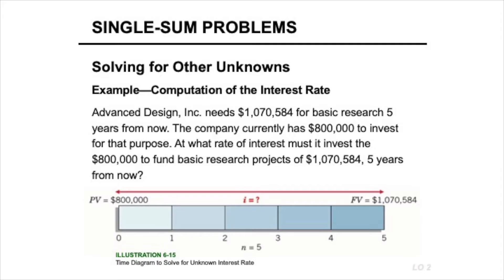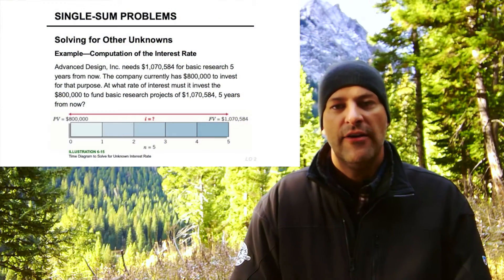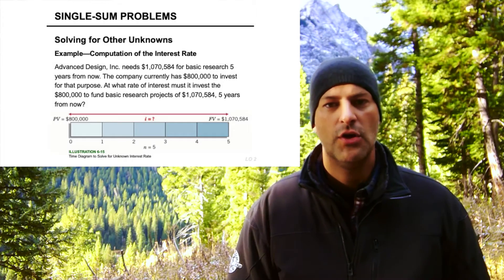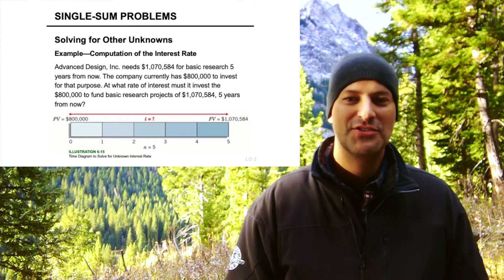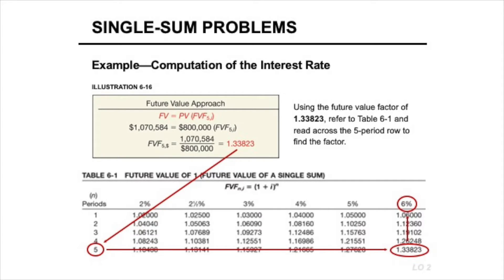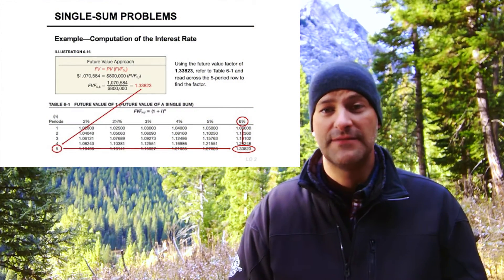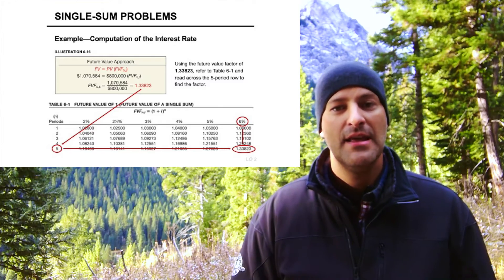Let's take a quick example. A company needs $1,070,000 for a research project five years from now. The company currently has $800,000 and wants to figure out what interest rate they need to grow that amount. We're trying to calculate the interest rate; we know the period and we know the present and future values. So we take the future value of $1,070,000 over the present value of $800,000, which gives us a factor of about 1.33. We know the number of periods is five, so we look at the fifth-period row and move across until we find the factor of 1.33 — that corresponds to 6%. So they need to earn a 6% annual rate over the next five years for $800,000 to grow to $1,070,000, which is actually reasonable.